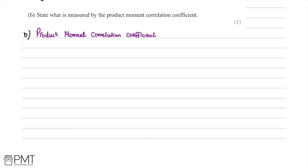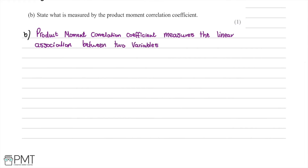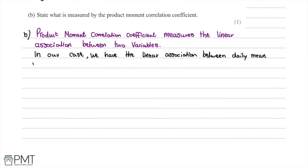In part (b) we're asked to state what is measured by the product moment correlation coefficient. The product moment correlation coefficient measures the linear association between two variables — in our case, the linear association between daily mean wind speed, denoted by W, and daily mean temperature, denoted by T. There was one mark available for stating the linear association between wind speed and temperature.